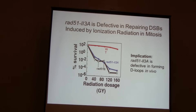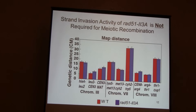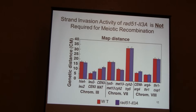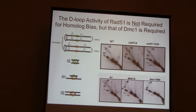The real experiment: we wanted to ask whether Rad51 contributes strand exchange activity in meiosis. Classic tetrad analysis and genetic mapping across nine different intervals comparing wild type with the 23a mutant showed no phenotype. The only detectable phenotypes are a slight reduction in spore viability and about a one-hour delay to meiosis I.